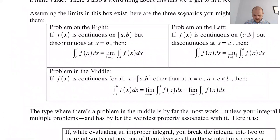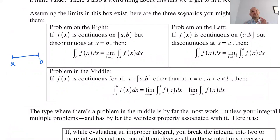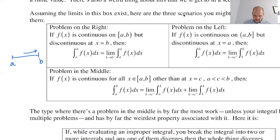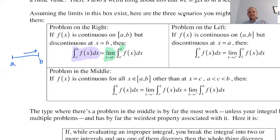If we have a problem on the right — you're trying to go from a to b, and there's a vertical asymptote at b — you're continuous on the interval from a to b including a but not including b, so there's an infinite discontinuity at b. There's only one way to approach b and that's from the left. So the integral from a to b of f(x) dx becomes the limit as k approaches b from the left of the integral from a to k of f(x) dx.